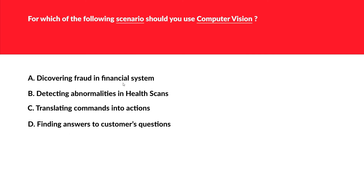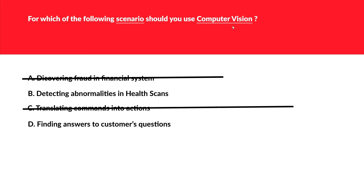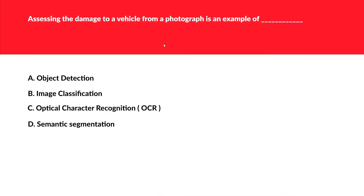This is a scenario-based question related to computer vision. First option: 'discovering fraud in a financial system' — that is the job of anomaly detection, not computer vision. 'Detecting abnormalities in health scans' looks to be a potential option. 'Translating commands into actions' requires key phrase or intent extraction, not computer vision. 'Finding answers to customer questions' can be done with conventional AI and NLP — it doesn't fit computer vision. So we are left with detecting abnormalities in health scans as the correct option.